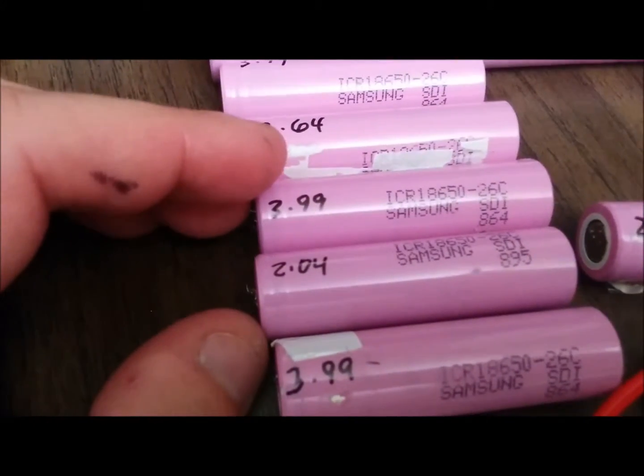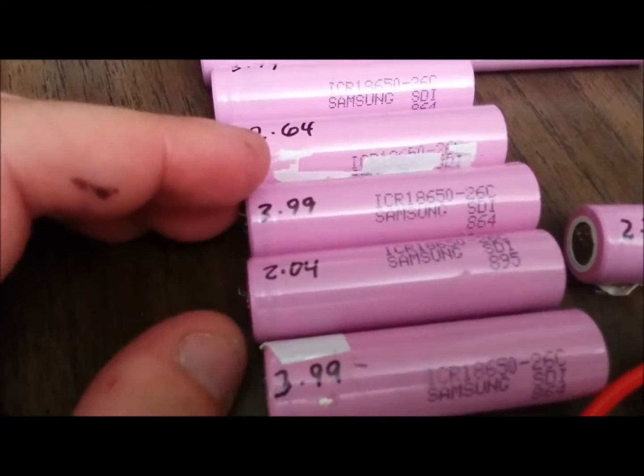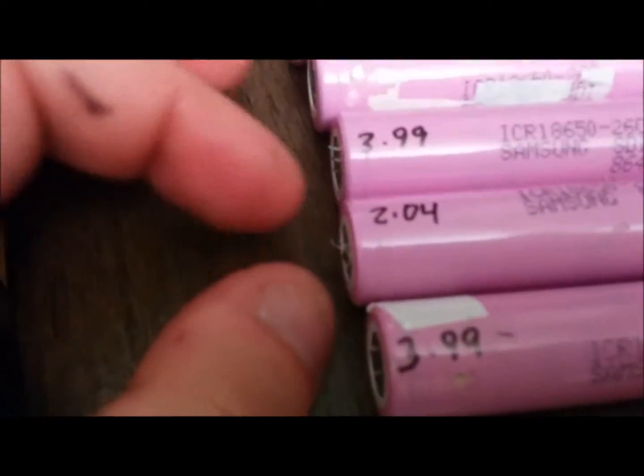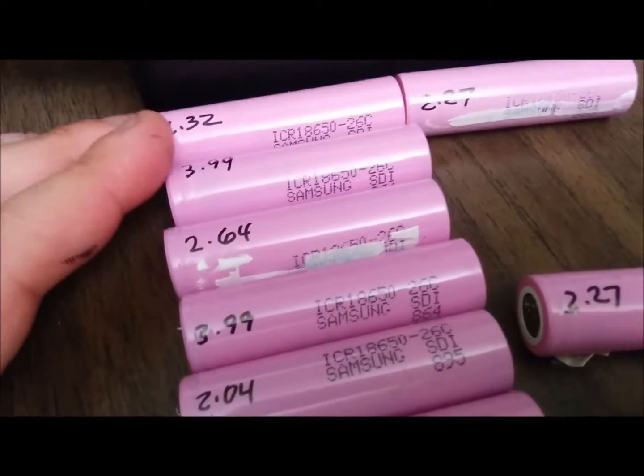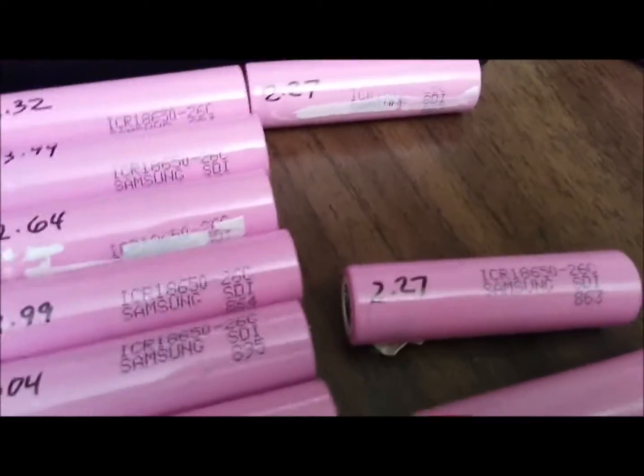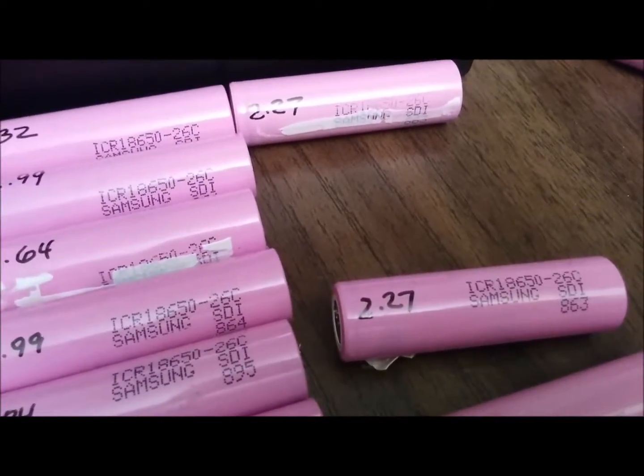One battery pack for a laptop is six of these cells, so you can see the different voltages. We'll probably have six of the same and then six of the same and six of the same.